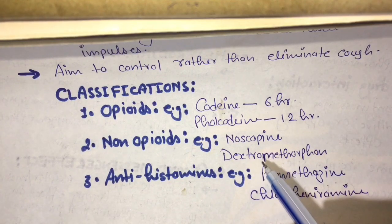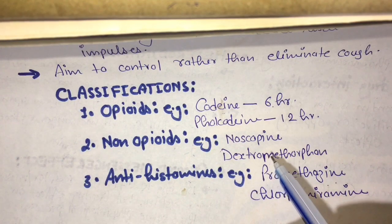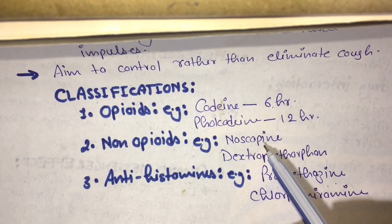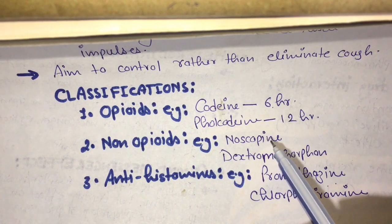Noscopine acts to depress the cough, but unlike codeine and falcodeine, it does not have narcotic, psychotropic, analgesic, or dependency effects.